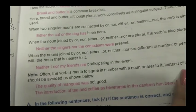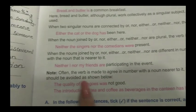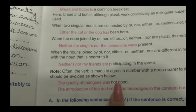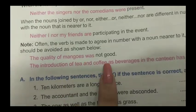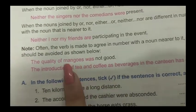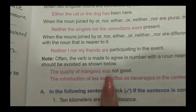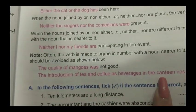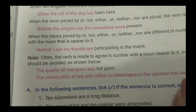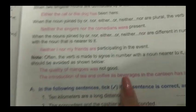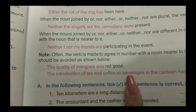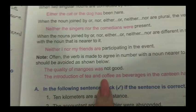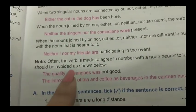Often the verb is made to agree in number with a noun nearer to it instead of its proper subject. This should be avoided. For example: 'The quality of mangoes was not good' — here 'mangoes' tells us it is plural, but the subject is 'quality.' Another example: 'The introduction of tea and coffee as beverages in the canteen has been finally done' — this is singular.